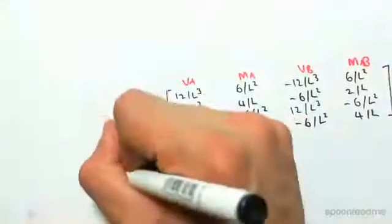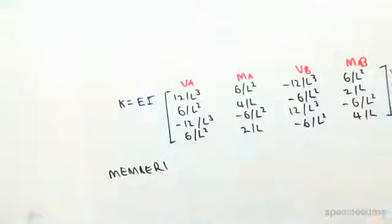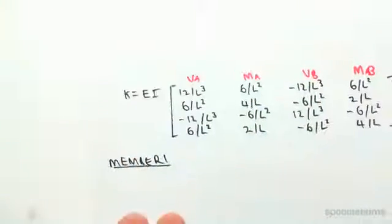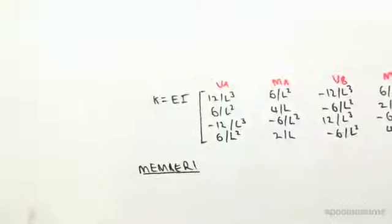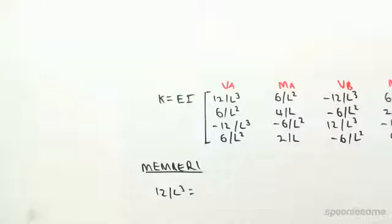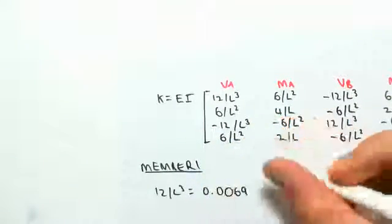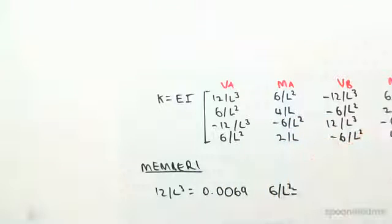We're going to look at member 1 first. Okay, so as I like to always do, we're going to find 12 on L cubed. So that would be 12 on 12 cubed, which would give us 0.0069.